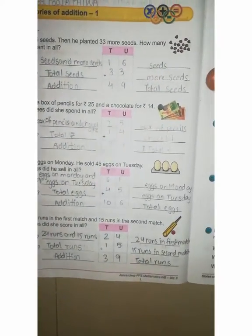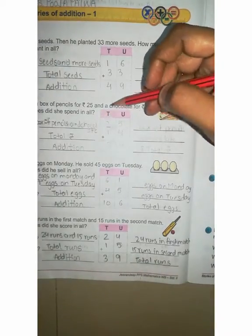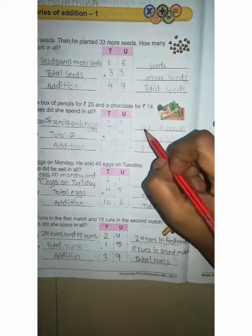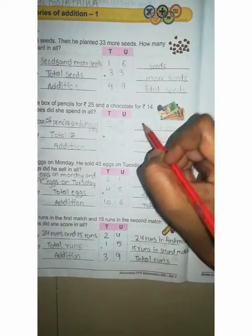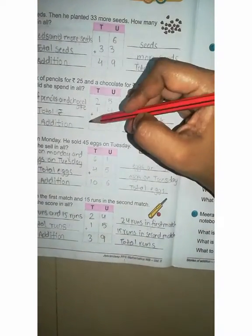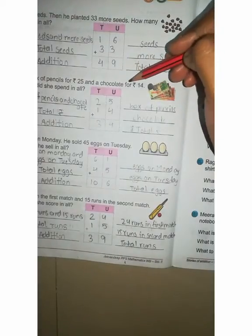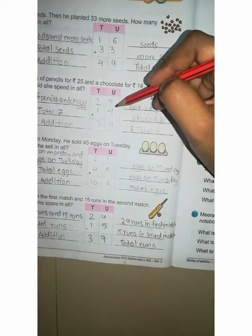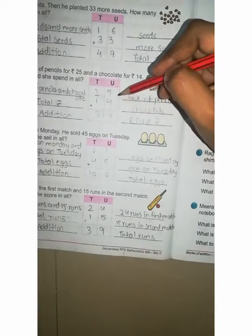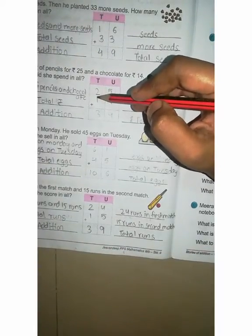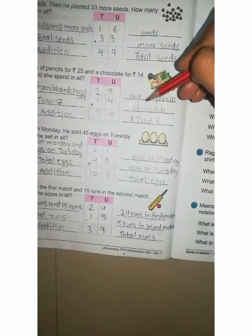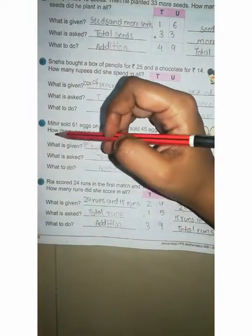Now first line, write here 25 pencil box, right, 25 rupees pencil box. Plus 14, how much? 14 rupees chocolate, right. 25 plus 14. 5 plus 4 how much? 9. And 2 plus 1 how much? 3. 39 total rupees.